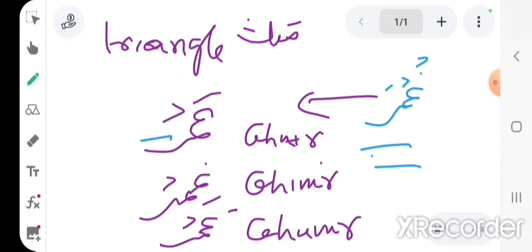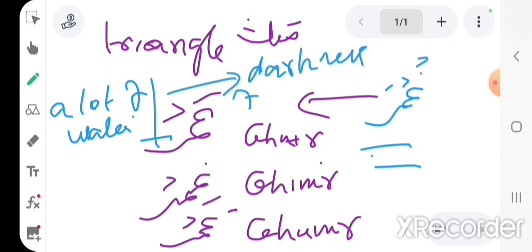Ghamr with fatha means a lot of water. It also means darkness of night, and for darkness that's what the ghamr is.